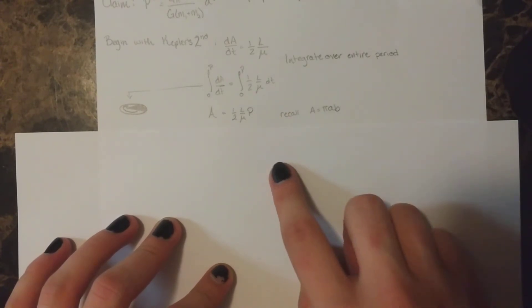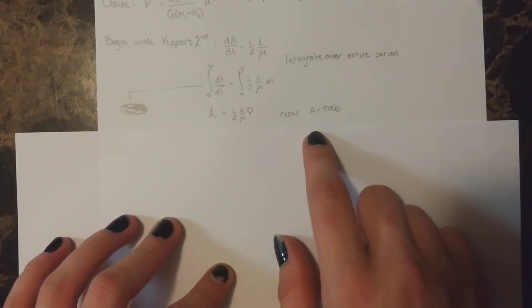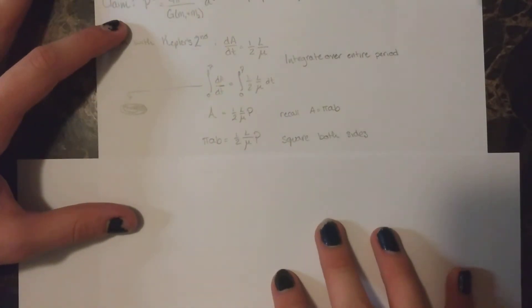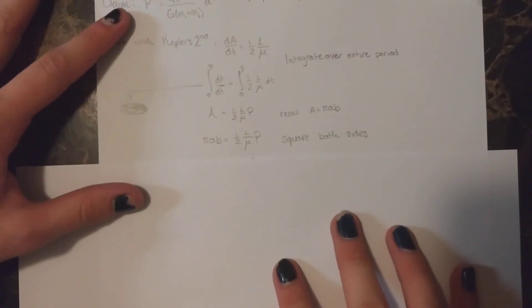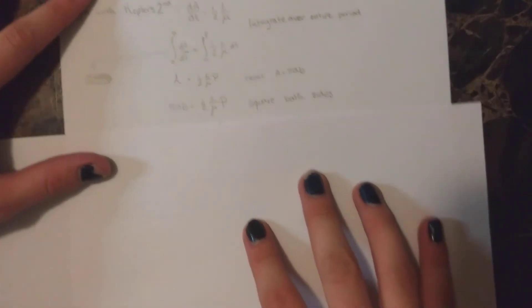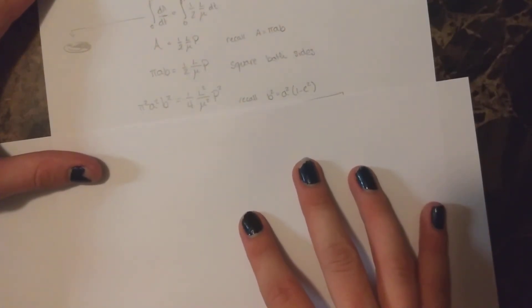Now we can remember that the area of the ellipse is pi times a times b, and so we'll replace that with the area. And now if we square both sides of this equation, we get pi squared a squared b squared is equal to 1 over 4 l squared over mu squared times p squared.